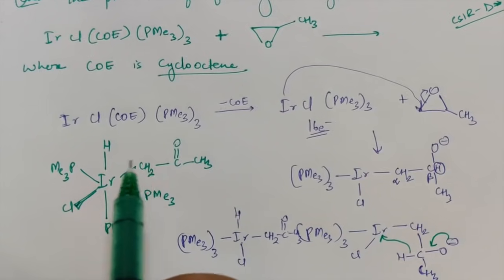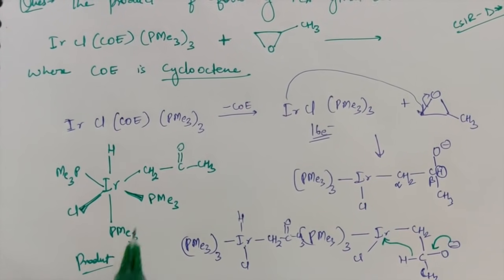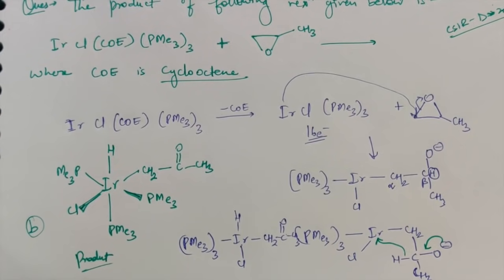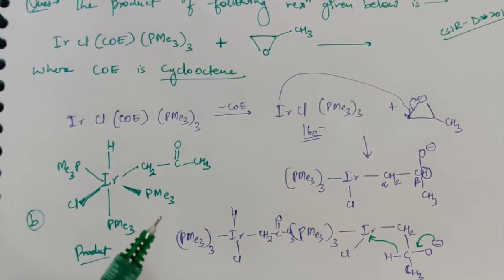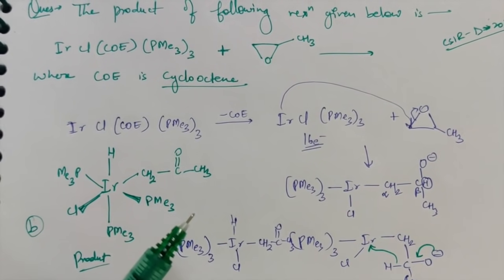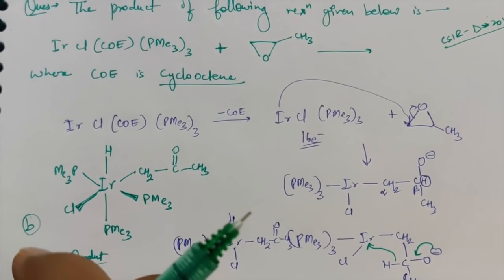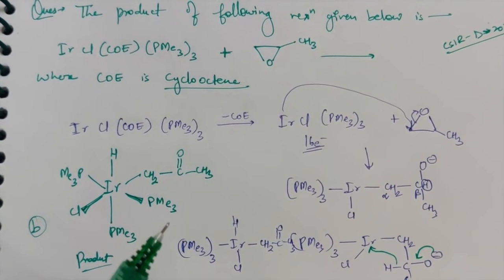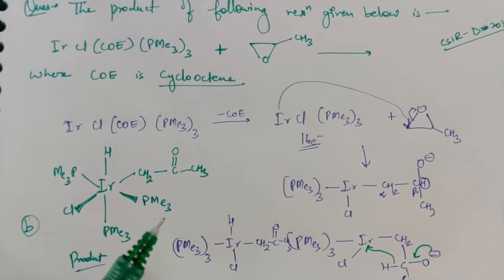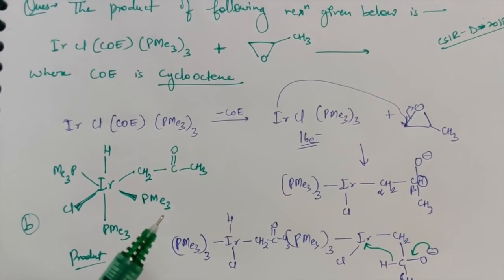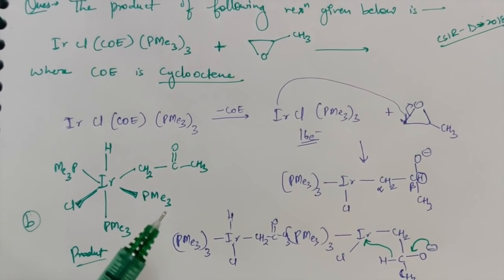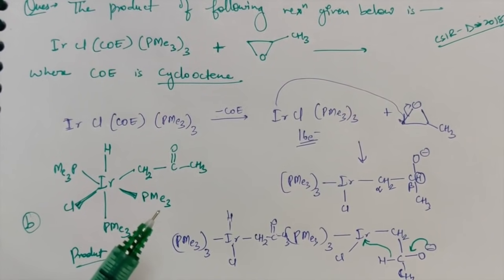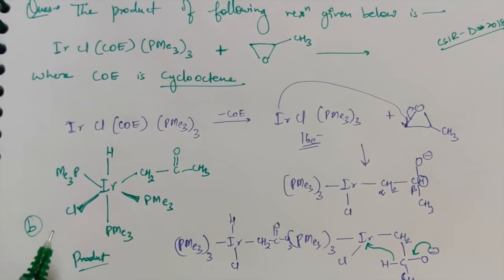So this was question 61 of Set A of that paper — the answer was option B. This is how you have to approach questions from the reaction mechanism part of organometallic chemistry: understand all the reactions, be very careful, and solve previous years' questions. That's all for this particular video. If you like this video please give it a like, ask anything in the comment section, subscribe to the channel, and press the bell icon for notifications. Thank you so much for watching — have a great day, bye!